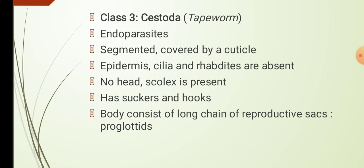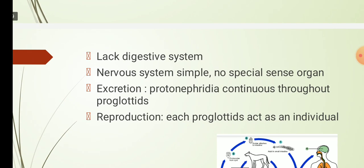Cestoda completely lack a digestive system because, as endoparasites, readily digested food is available from the host; they absorb food through the skin. The nervous system is simple — proglottids are united by a nerve cord and there are no special sense organs. Excretion is similar to other flatworms with protonephridia continuous throughout the proglottids, with flame cells present on each proglottid.